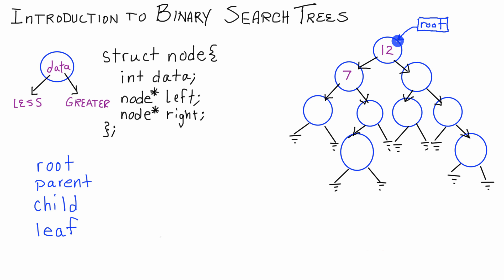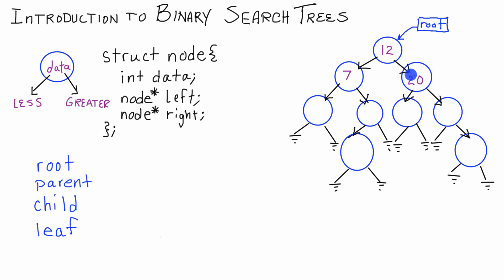Parent describes the relationship between two nodes. For example, 12 is the parent of 7, because the 12 node connects to the 7 node with one of its pointers. If we put 20 here — since it's greater than 12 — then 20 would be the child of 12, and 12 would be the parent of 20. So 12 is the parent of both 7 and 20, while 7 and 20 are each the child of 12, because they are connected one level down.